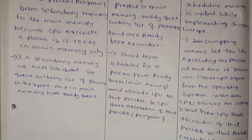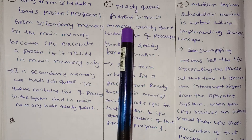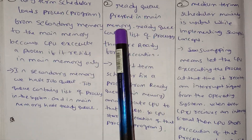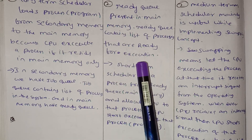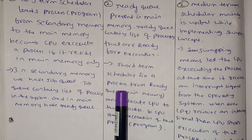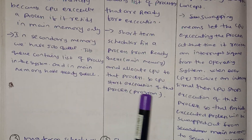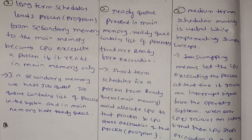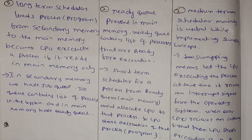The Short Term Scheduler works with the ready queue present in Main Memory. The ready queue contains a list of processes that are ready for execution. Short Term Schedulers pick a process from the ready queue and allocate the CPU to that process, so the CPU starts execution of the process.